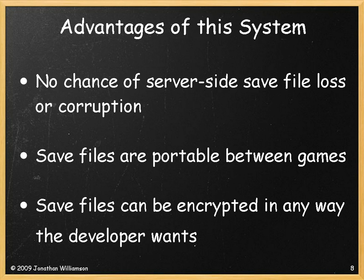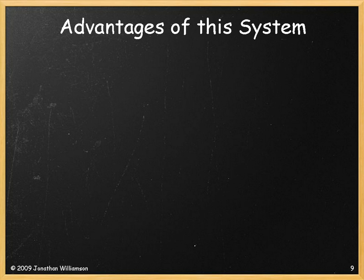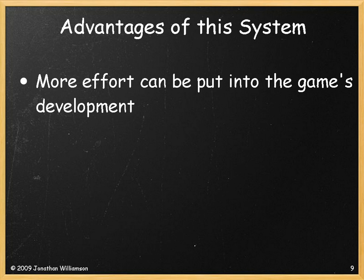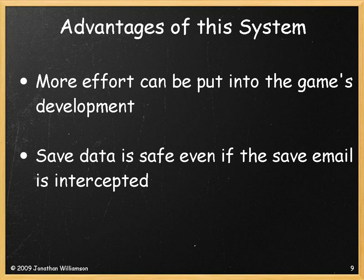Save files can be encrypted in any way the developer wants and can be as big as the developer wants, within reason. A save system allows more effort to be put into games' development — think Chrono Trigger, but in a browser game. Finally, save files are safe even if the email is intercepted. The thief's email address would not match the email address encrypted in the save data, and even if your email address was spoofed, they'd have to intercept the save email sent to your address when the thief attempts to save again, which is near impossible to do repeatedly.